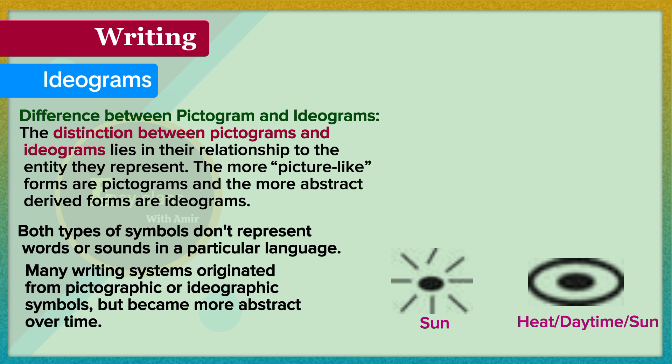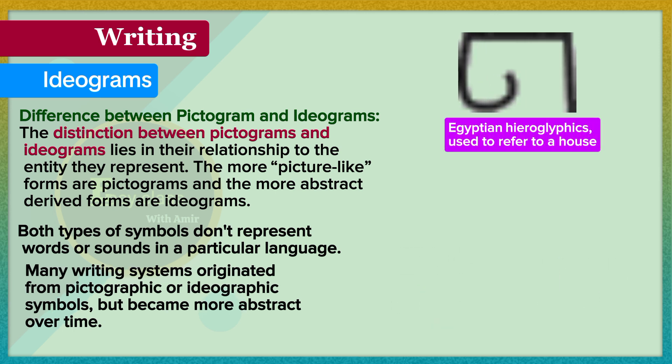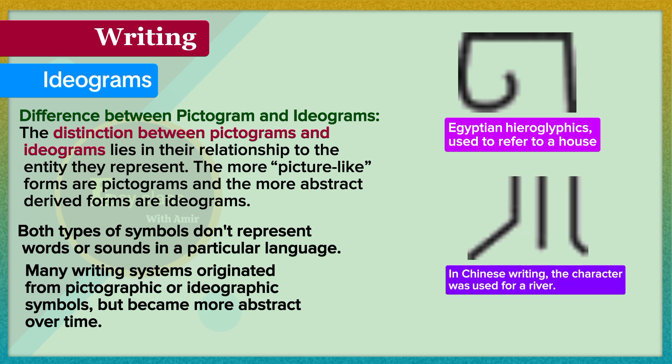For example, in Egyptian hieroglyphics, the symbol for house was derived from a diagram-like representation of the floorplan of a house. In Chinese writing, the character for river had its origins in the pictorial representation of a stream flowing between two banks. However, it is important to note that neither the Egyptian nor the Chinese written symbols are actually pictures of a house or a river — they are more abstract. When we create symbols in a writing system, there is always an abstraction away from the physical world.